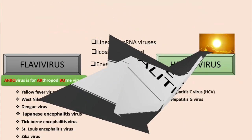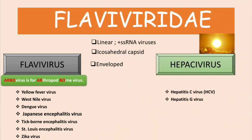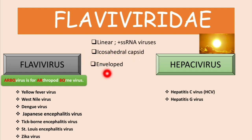The causative agent of this disease belongs to the family Flaviviridae. The viruses in this family are linear single-stranded RNA viruses. They have an icosahedral capsid and they are enveloped. Specifically, the Japanese encephalitis virus belongs to the genus Flavivirus.